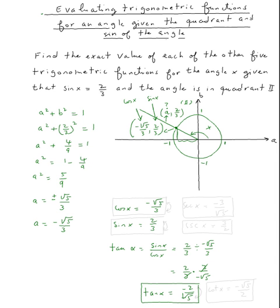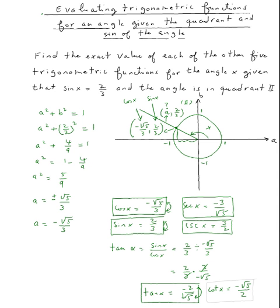Secant is just the reciprocal of cosine: −3/√5. Cosecant is the reciprocal of sine: 3/2. Cotangent is the reciprocal of tangent: −√5/2. And that's it for this example.